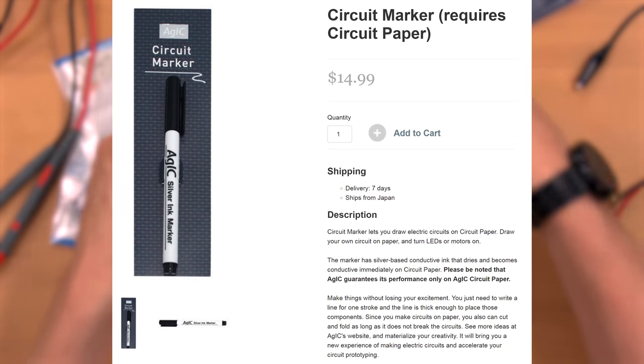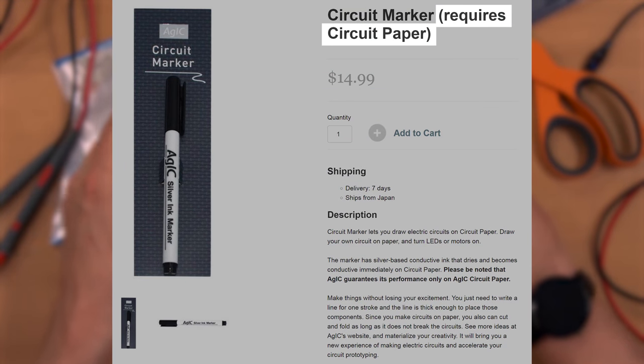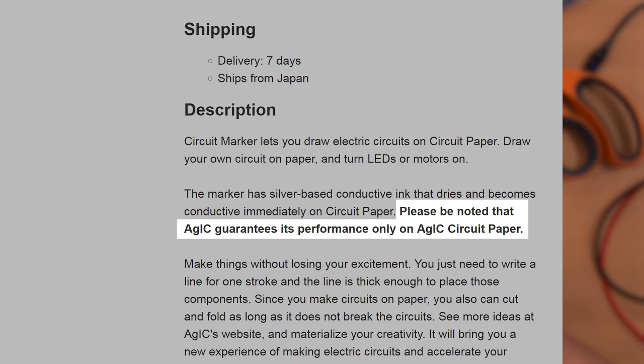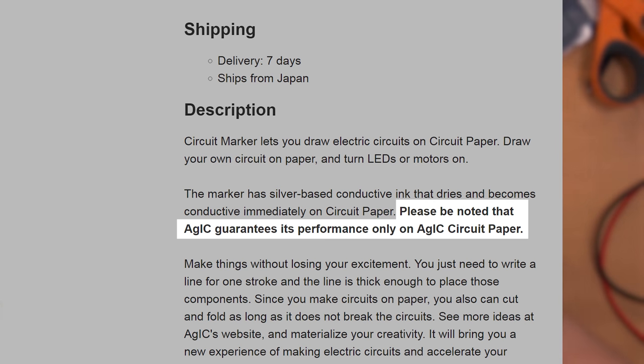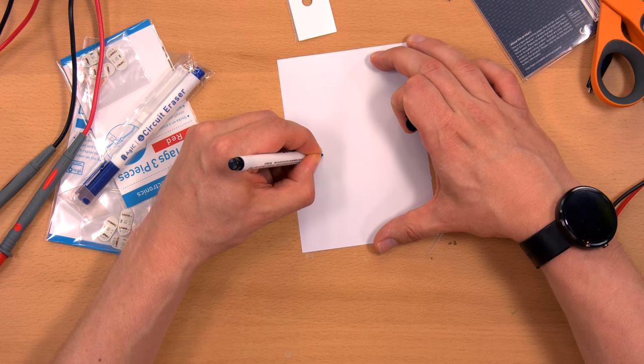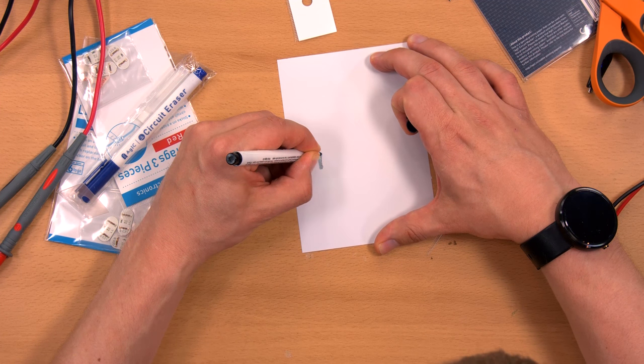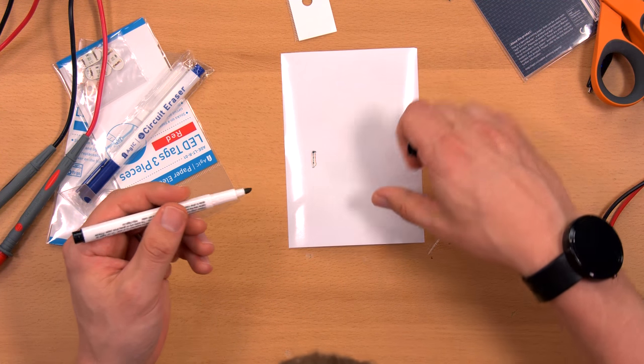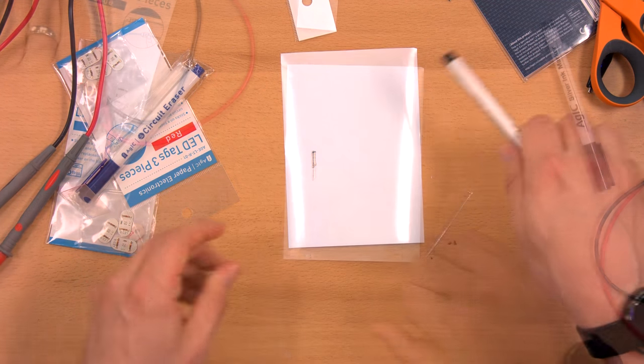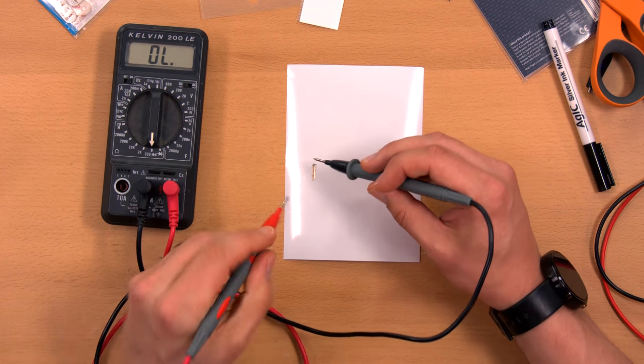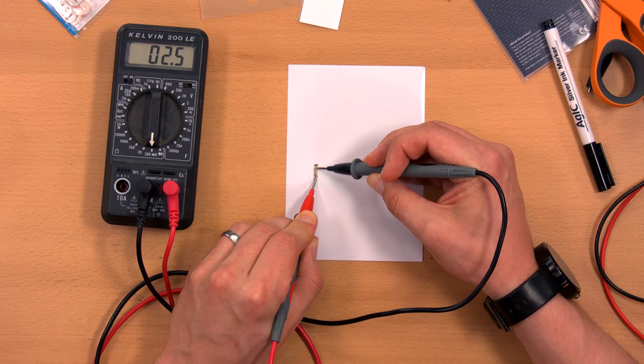And they kind of imply that you need to use their special paper for this, but on the back of the marker it says, can only be used on gloss photo papers. It doesn't specifically say that you need to use this paper. So, the principle is that you draw your circuit, I'm not sure how, the marker's just starting off a little slow, it looks like. And in theory, that should now be conductive. I'm not sure if it needs to dry or not, but if it's conductive ink, it should work right away.